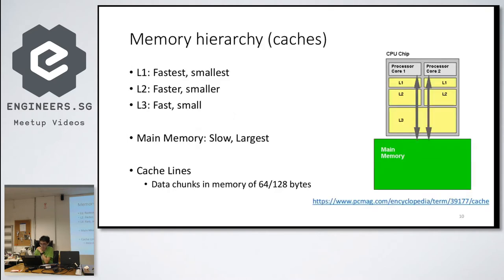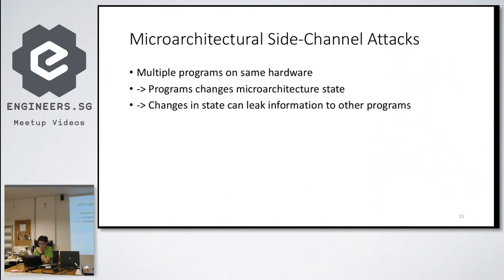Regarding the memory hierarchy: L1, L2, L3 — they use a concept called cache lines, where data chunks are about 64 to 128 bytes each. Now let's look at the concept of side channel attacks.